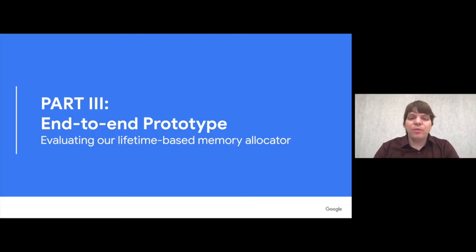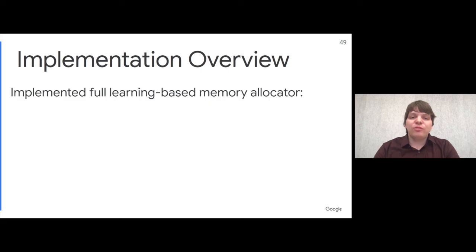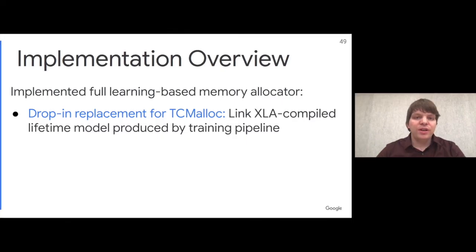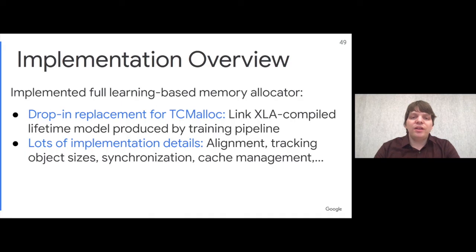I would now like to show you a prototype we built to demonstrate its effectiveness. This is a research prototype and not a production allocator, so it is not tuned and not run in a production setting. We implemented our allocator as a drop-in replacement for TCMalloc, which means we can run it with real C++ workloads. To build the allocator, you collect lifetime data, train a model against it, and then compile this model to run directly in the application.